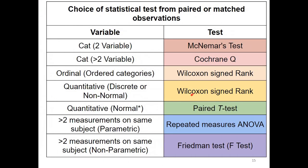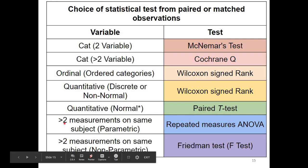This slide shows the choice of statistical tests for paired or matched observations. For two categories such as pass and fail before and after, we use McNemar's test. For more than two variables such as pass, fail, or withheld, we use Cochran's Q test. For ordinal variables — mild, moderate, severe — before and after intervention, or for quantitative non-normal distribution, we use the Wilcoxon signed-rank test. For quantitative normally distributed data, we use the paired t-test. For more than two measurements on the same subjects that are normally distributed, we use repeated measures ANOVA; if not normally distributed, Friedman's test.